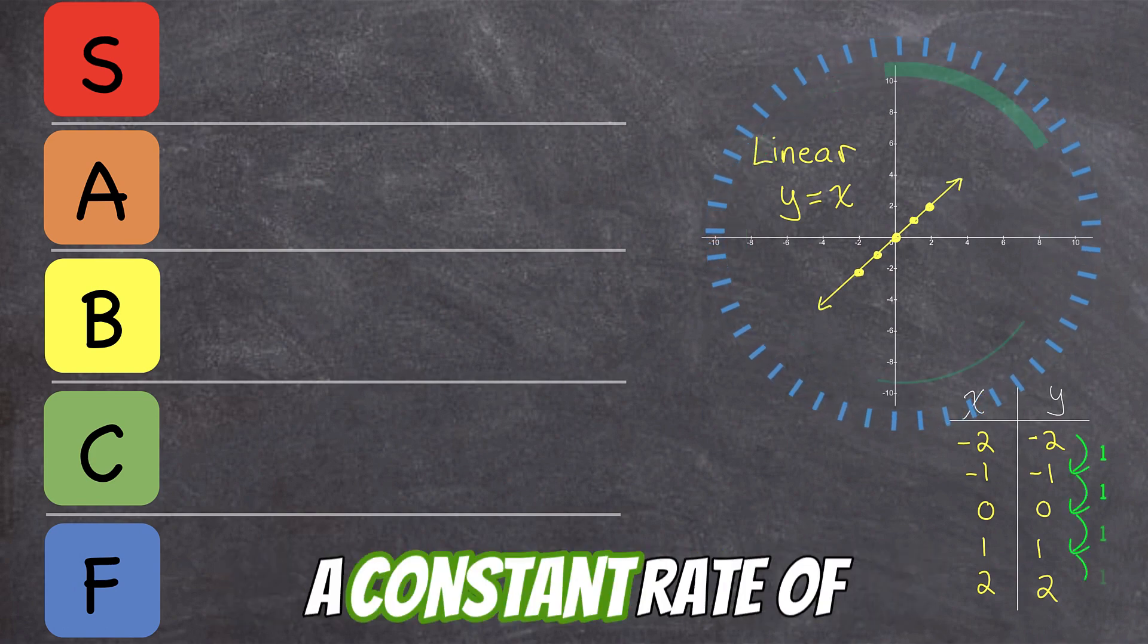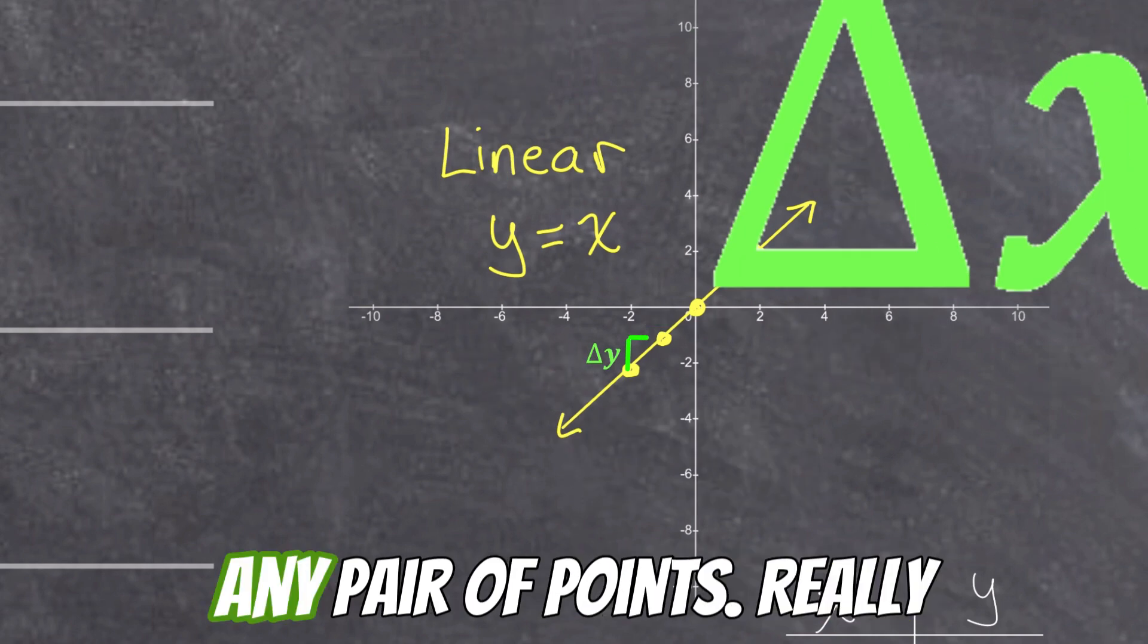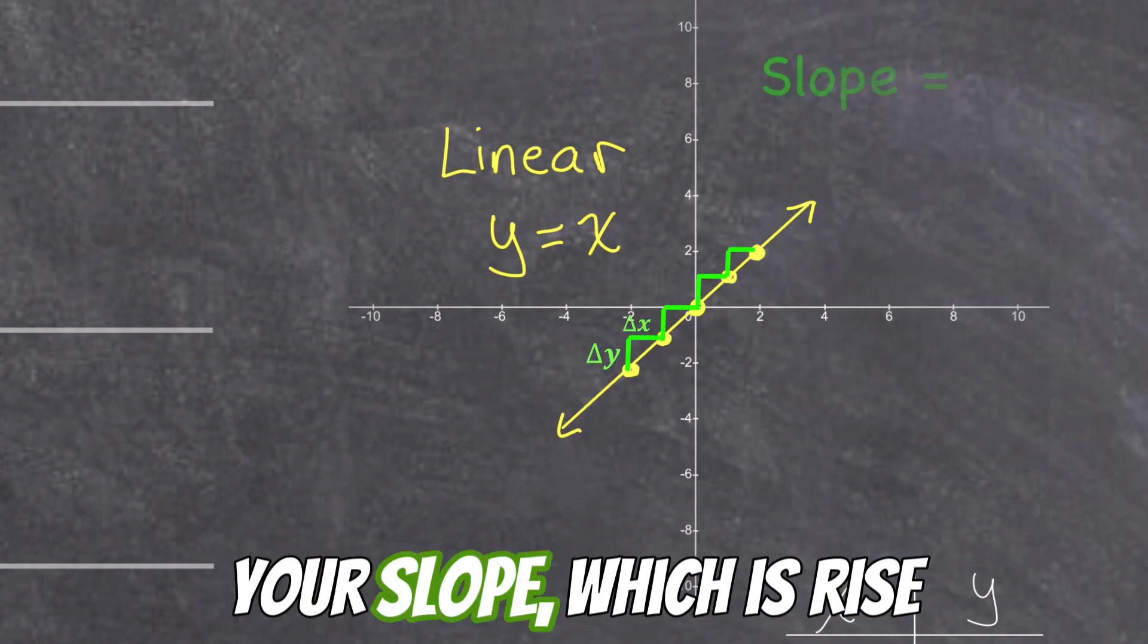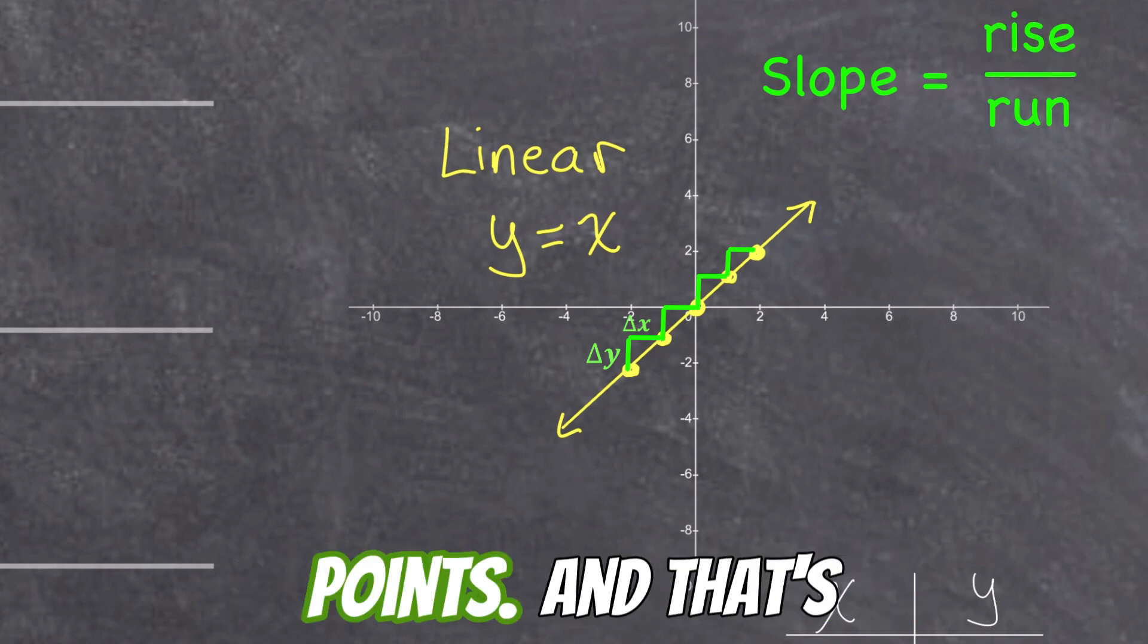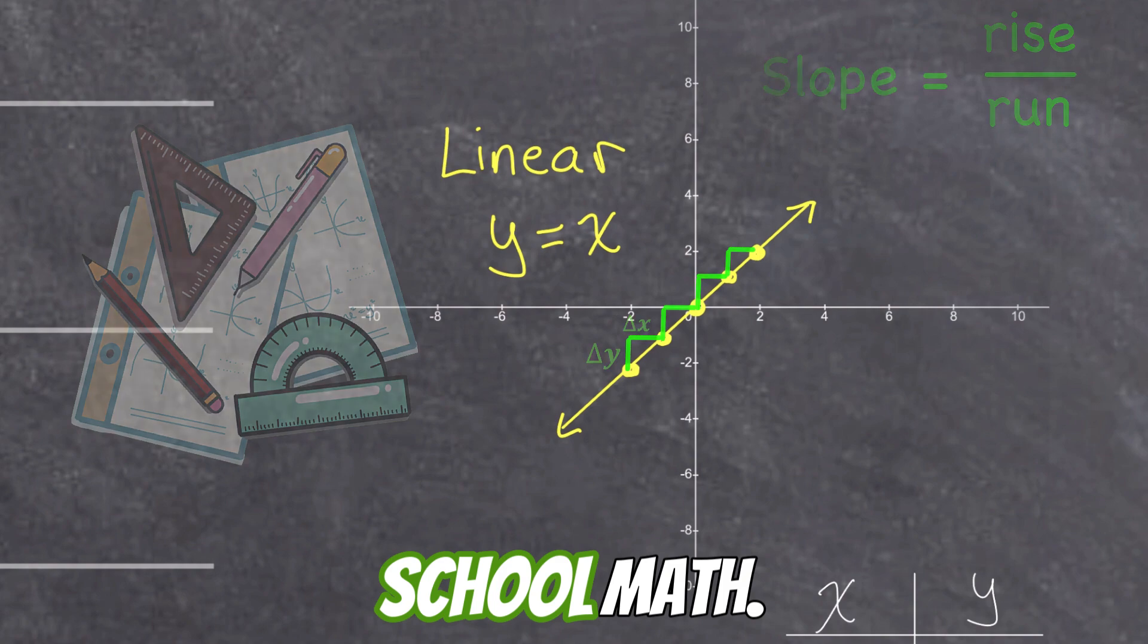All linear functions have a constant rate of change, which means the slope is the same between any pair of points. It's really easy to graph. Just use your slope, which is rise over run, to plot your points, and that's probably the one thing that mostly everyone remembers from high school math.